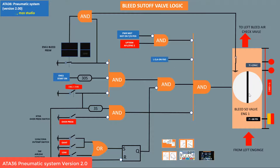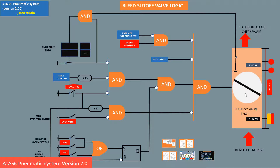This is the engine number one bleed valve over. If your aircraft number 2 engine has auto feather, engine number one will be at feather. So the system closes the bleed valve of the outboard engine, like this. At feather, this bar closes.